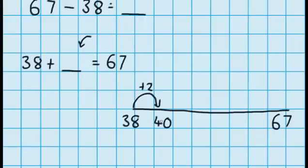And the reason I've gone to a tidy number is because it makes my next jump really easy to do. So from 40 I'm going to jump all the way up to 67, and I know that from 40 up to 67 is a jump of 27.